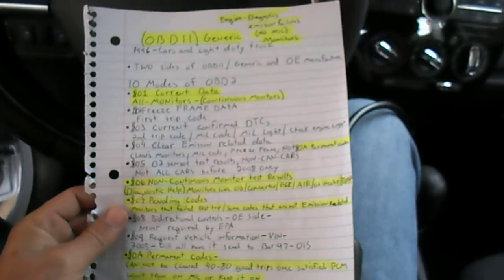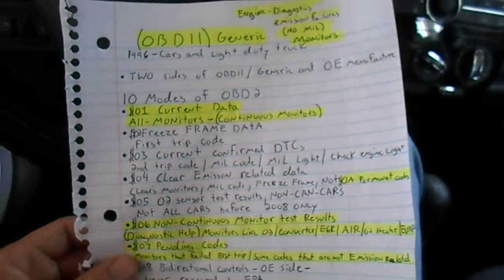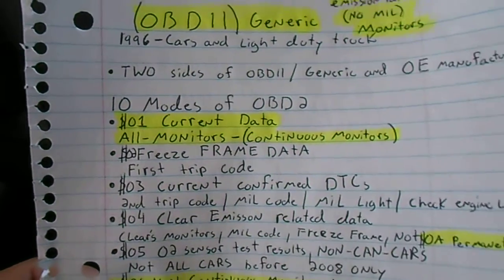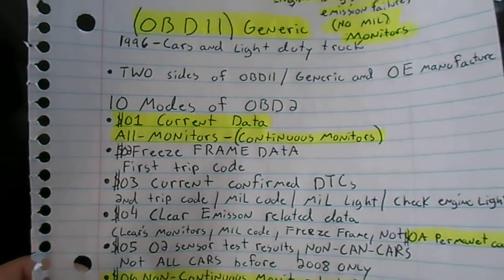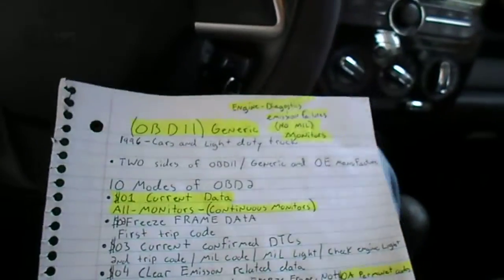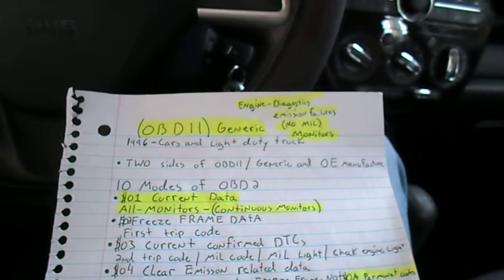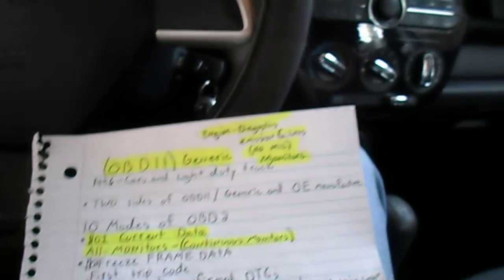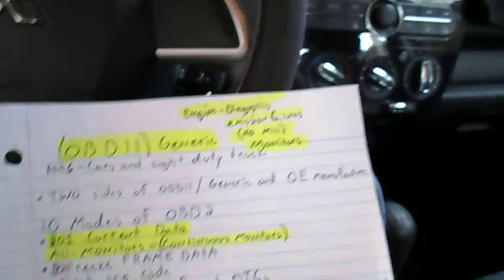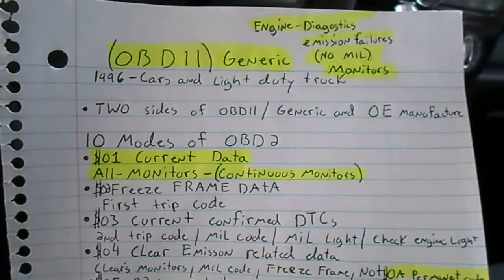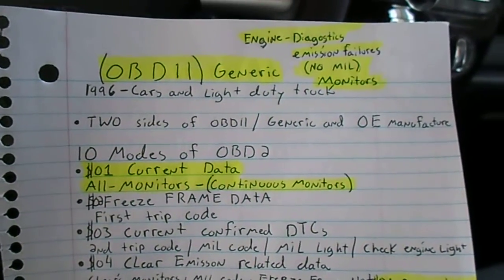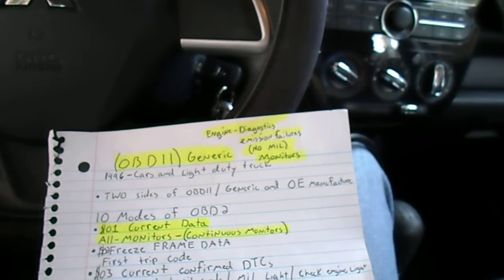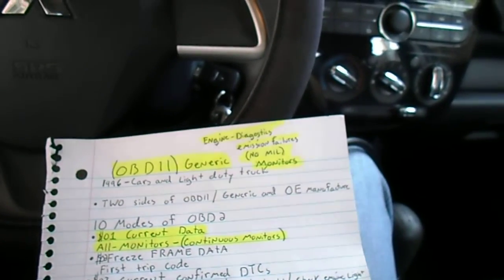There are 10 modes. Mode 1 is where all your monitors are. If you know what a monitor is, you'll know those things don't like to set. All monitors are in there. Continuous monitors are your fuel, comprehensive, and misfire.